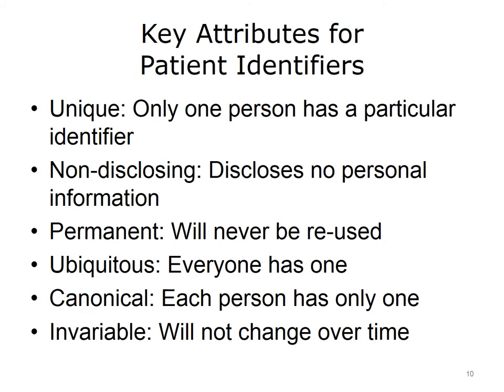What are some of the key attributes we would want in patient identifiers? These were laid out in a report by Connecting for Health published in 2005. We want the identifier to be unique, so that only one person has a particular identifier and it's not assigned to anyone else. The identifier should not be disclosing — it should be some sort of code that doesn't reveal anything personal about the individual. The identifier should be permanent, so that once assigned, it's never reused for anyone else. The identifier should also be ubiquitous, in that everyone should have one.